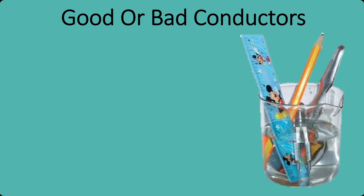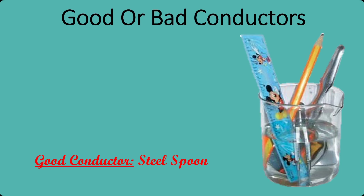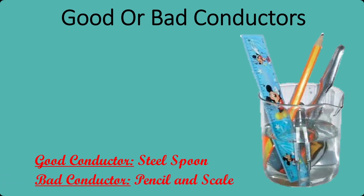You observe that the steel spoon gets hot. It is made up of metal. The spoon allows heat to pass through it, so it is a conductor. The plastic scale and the pencil do not get hot. The scale is made of plastic whereas the pencil is made of wood. Both plastic and wood do not allow heat to pass through them. They are called insulators.